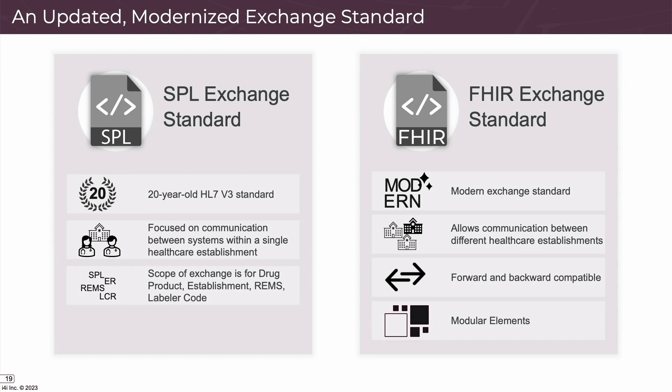The last benefit is technology-related. Using FHIR for EPIs means using a newer, more modern exchange standard. SPL is based on HL7's version 3 standard from 2005, so it's almost 20 years old now. While SPL has been great, it is limited in scope to mainly data representation of drug product and establishment information. HL7 FHIR is a more modern exchange standard that allows for communication between different healthcare systems. It's modular and forward and backward compatible. While SPL is just the data representation, FHIR includes a communication mechanism on the API side of the exchange on top of the data and content, which will allow IT solutions to be developed faster and easier.